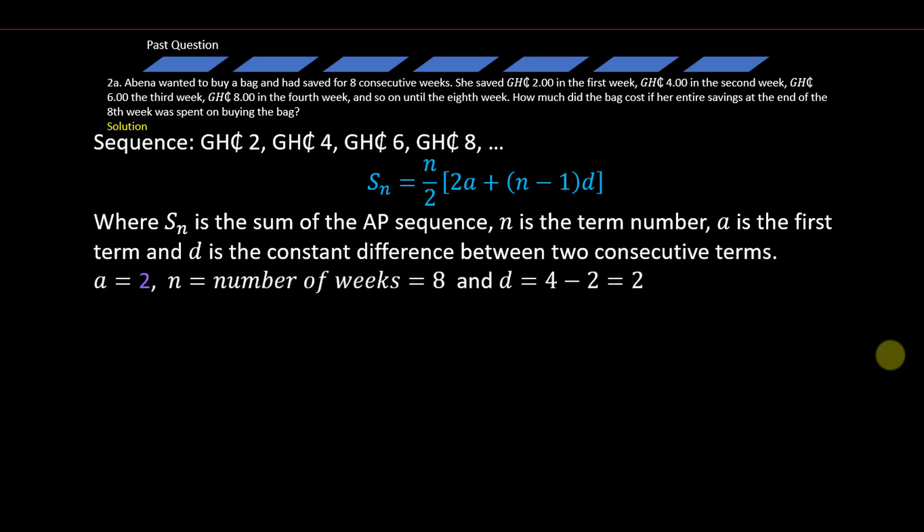Now what is a? The first contribution, that is 2 Ghana cedis. n is simply the number of weeks she contributed, so our total number of terms involved is simply 8. The common difference is simply 4 minus 2, which gives us 2. You can also pick 6 minus 4 or 8 minus 6 and so on. The difference is constant for all the sequence.